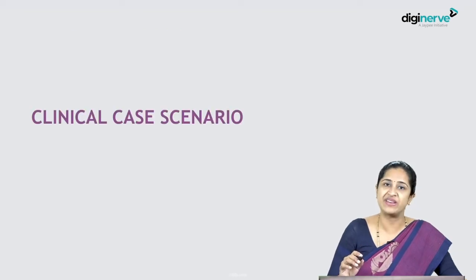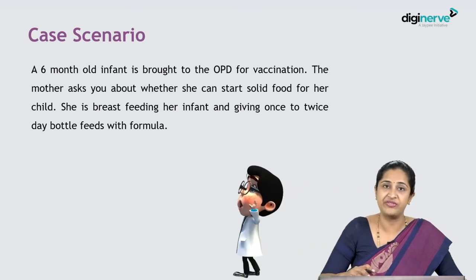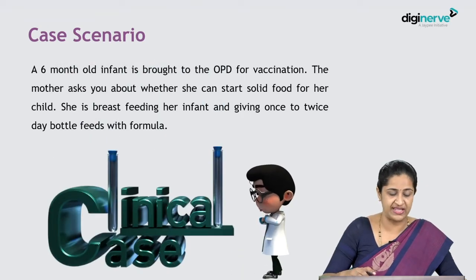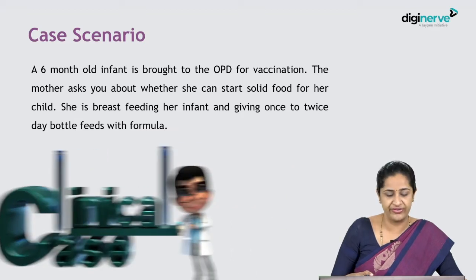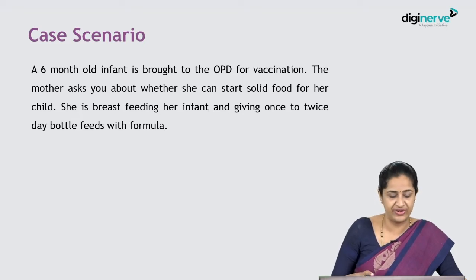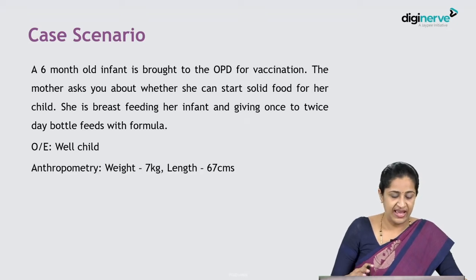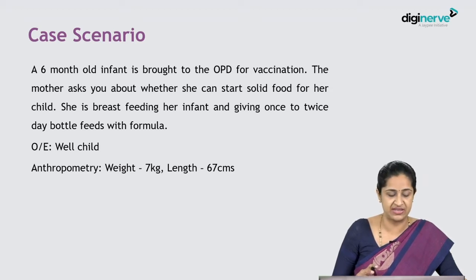Let's begin with the clinical case scenario. A six-month-old infant is brought to the OPD for vaccination. The mother asks whether we can start solid feeding for this child. She is breastfeeding her infant and giving one or twice daily bottle feeds with formula. On examination, this is a well child. Anthropometry at six months: the baby weighs 7 kg and has a length of 67 centimeters.